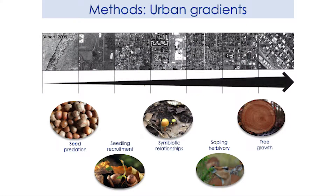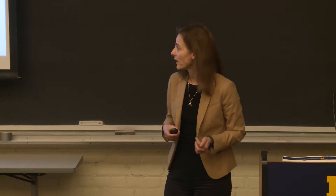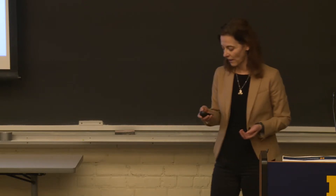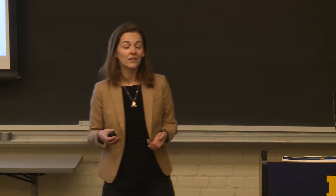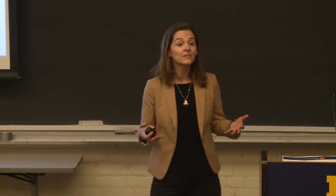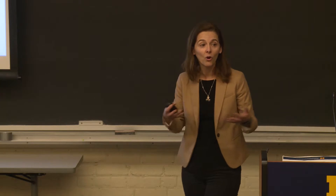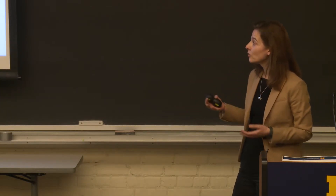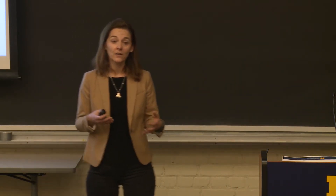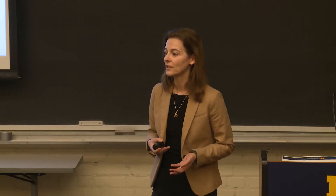So how do we study it? The methodology that we use is we work in gradients — gradients that go from what we consider to be wild, large forest spaces, all the way to very urbanized and built environments. We look for forest fragments in all these different areas and study different forest processes. We do this here in Washington County in Ann Arbor. You may think that Ann Arbor is not a very built environment, but Ann Arbor is a very representative city of eastern North America, so the studies that we are doing could be extrapolated to many other places. We look at these forests and look at different processes that are critical for the maintenance of the tree populations.